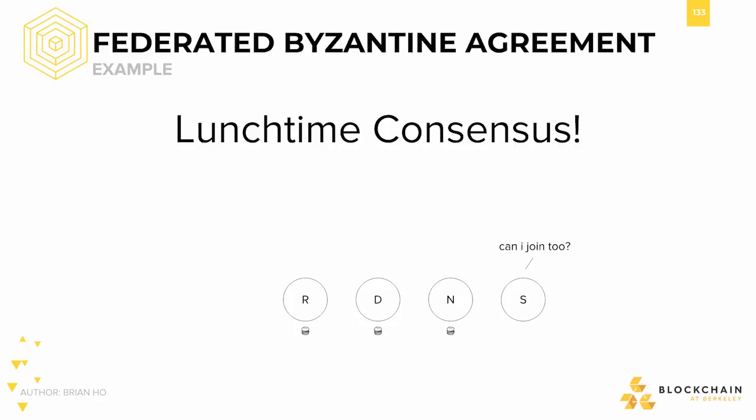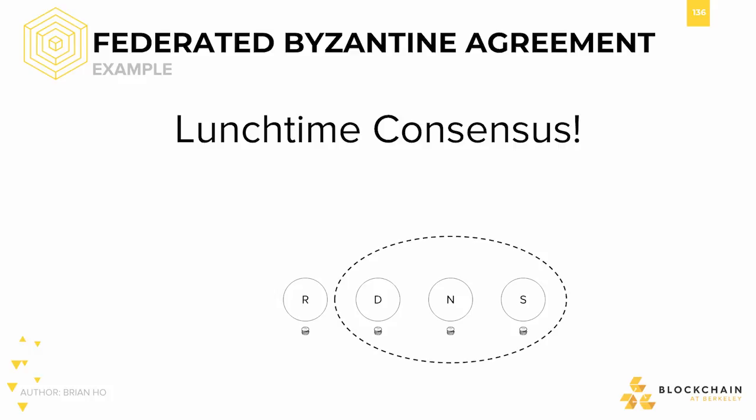Saroj notices our cheeriness and asks to join our friend group for lunch. However, he doesn't trust Rusty for whatever reason — perhaps because Rusty tried to get pizza on $1 burger day. Because of this, Derek and I decide to form a quorum slice with Saroj, meaning we all influence each other's decision making. Trust is beautiful, isn't it?